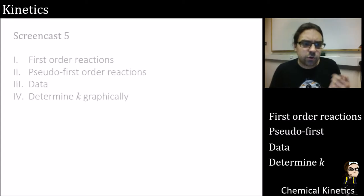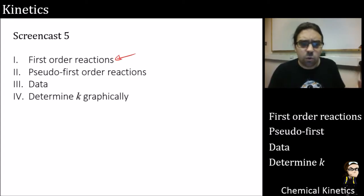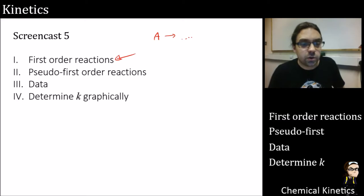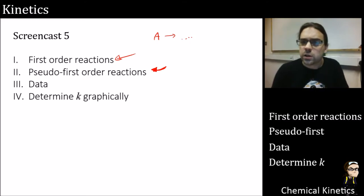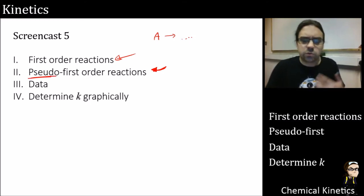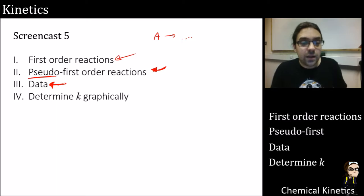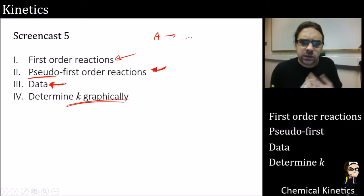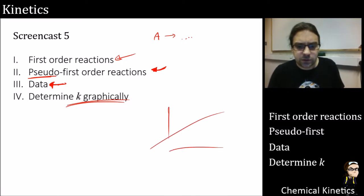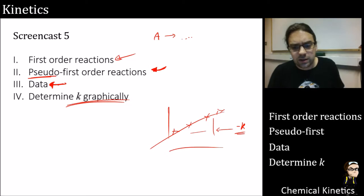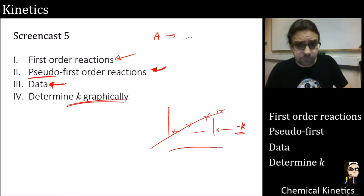So what will I cover in this one? First order reactions — what are they? We know they're basically one thing going to another. What's the equation? And a pseudo first order reaction — from the word 'pseudo', why is it slightly different? Then we'll look at some actual data, how it works, and determine k graphically — drawing a graph and getting a k value out of it.